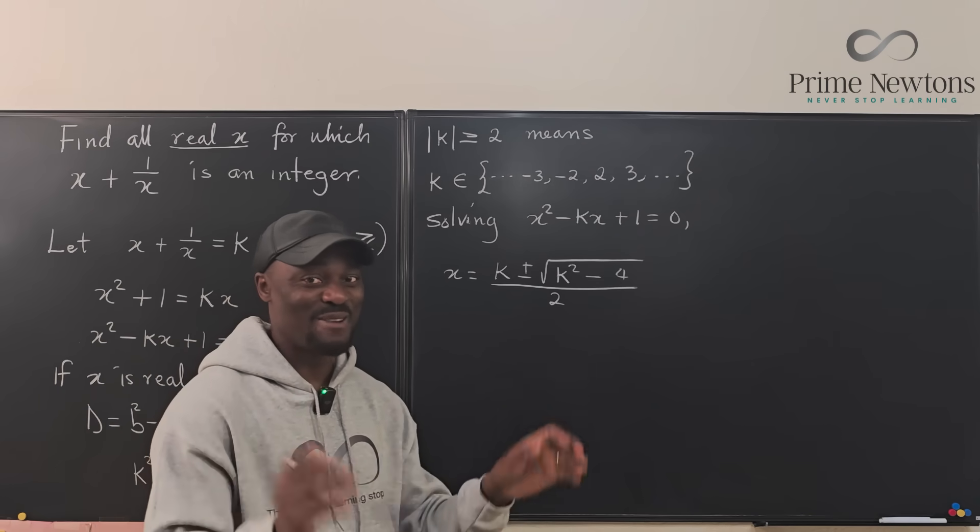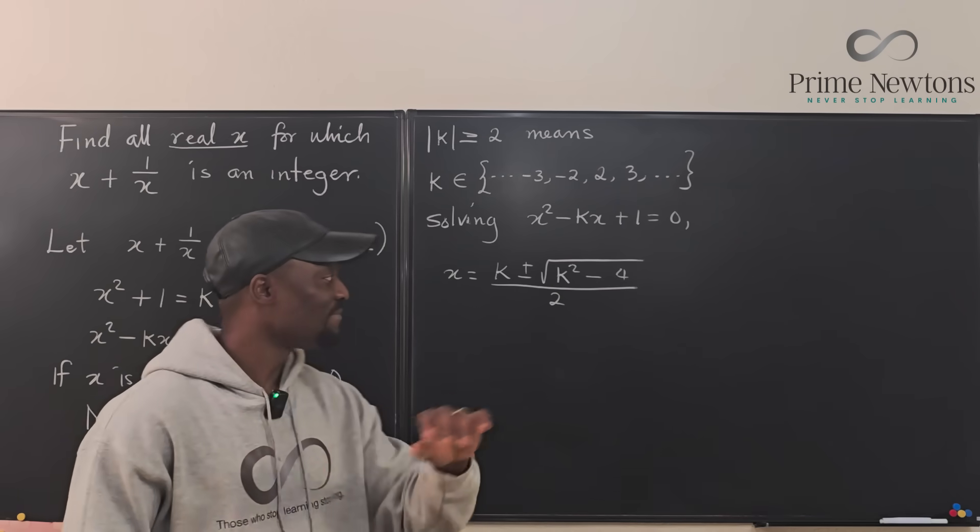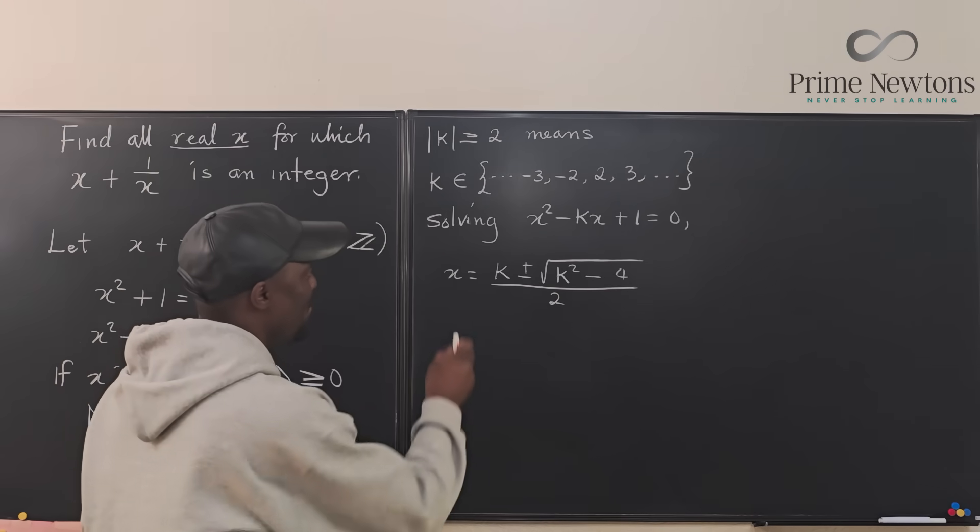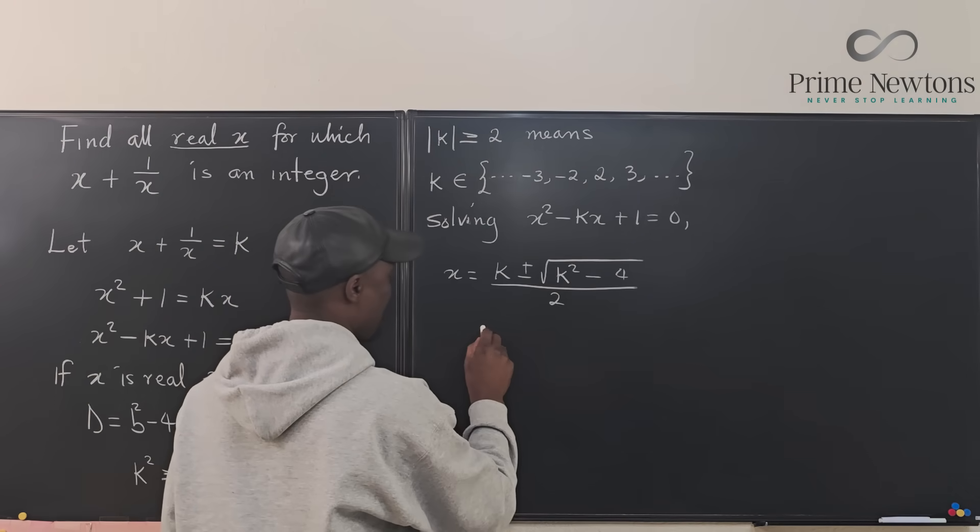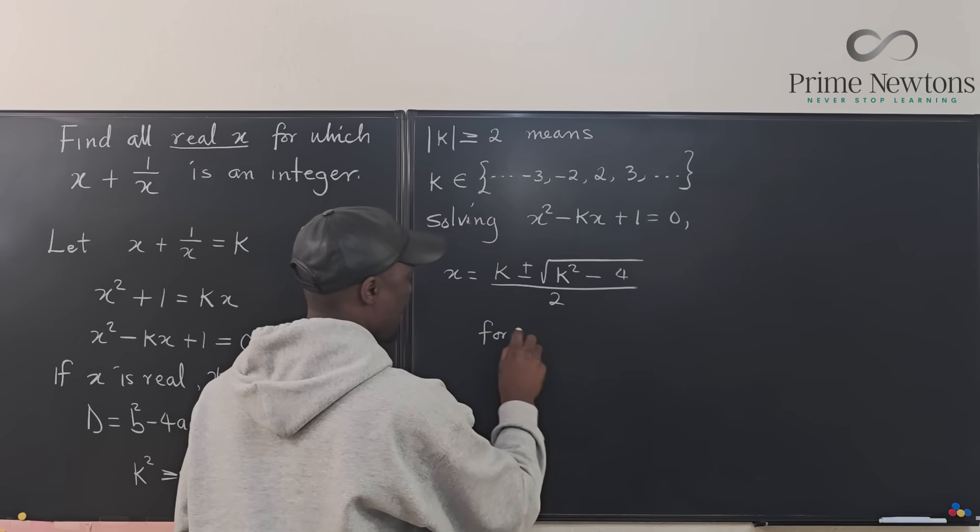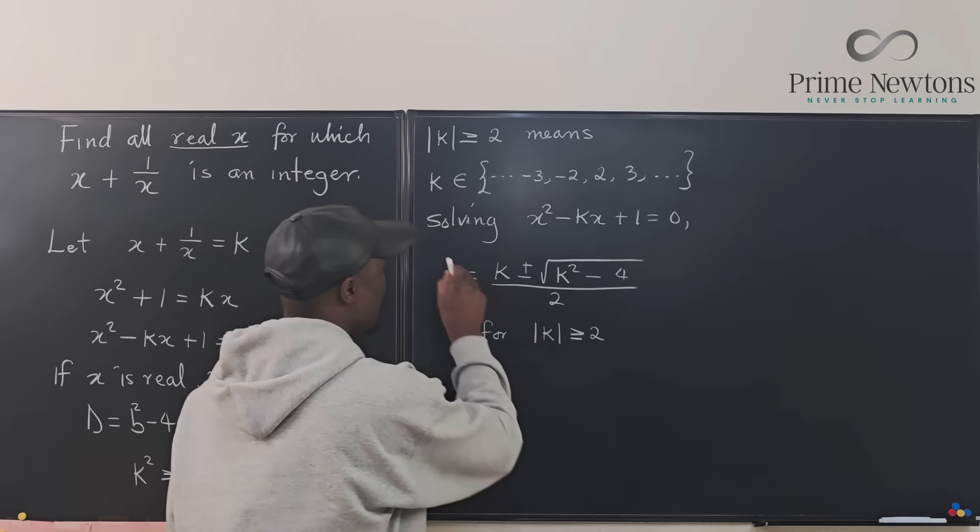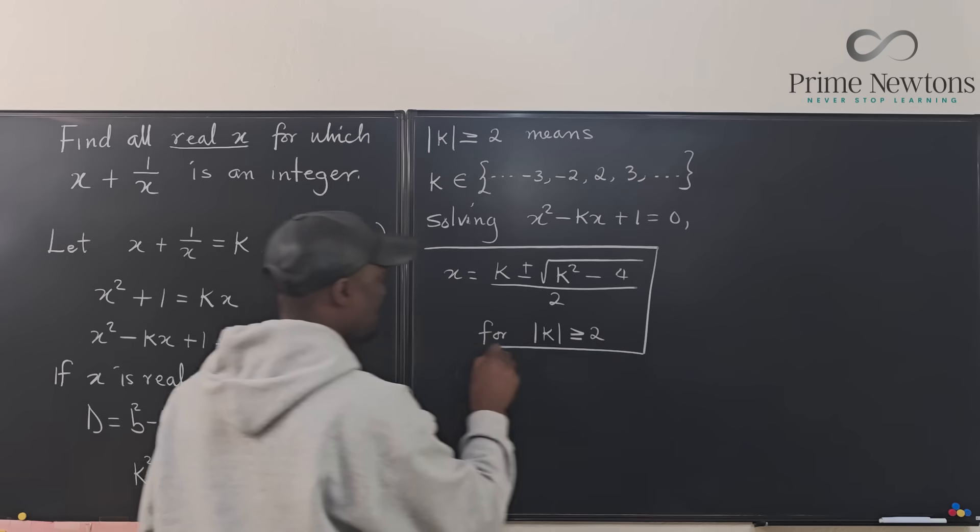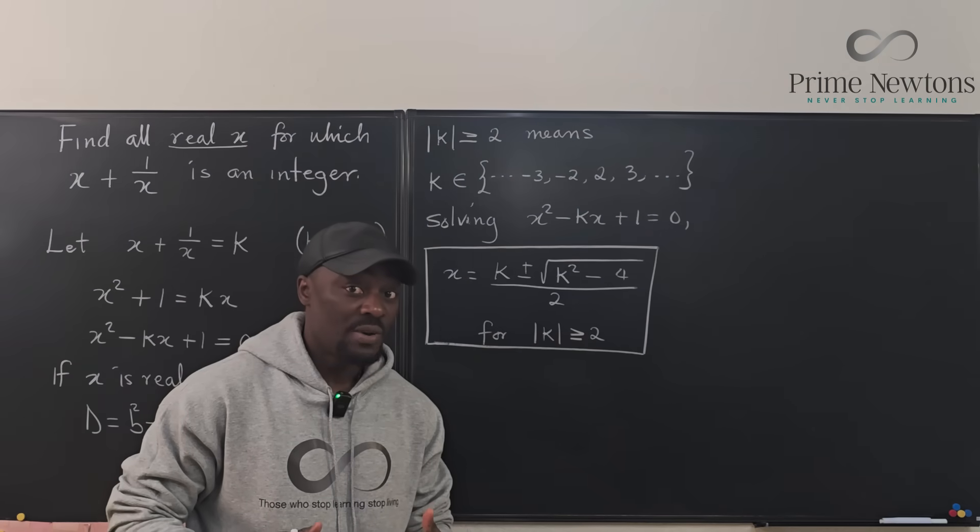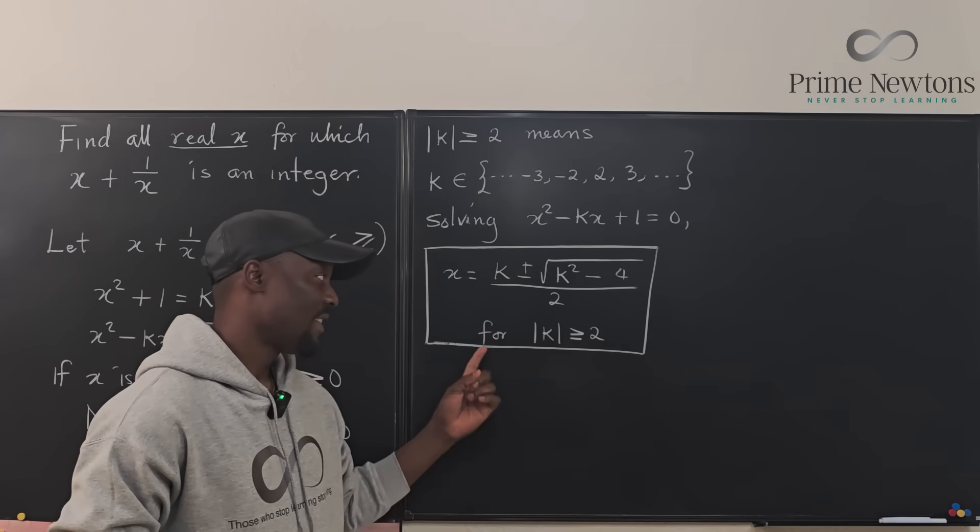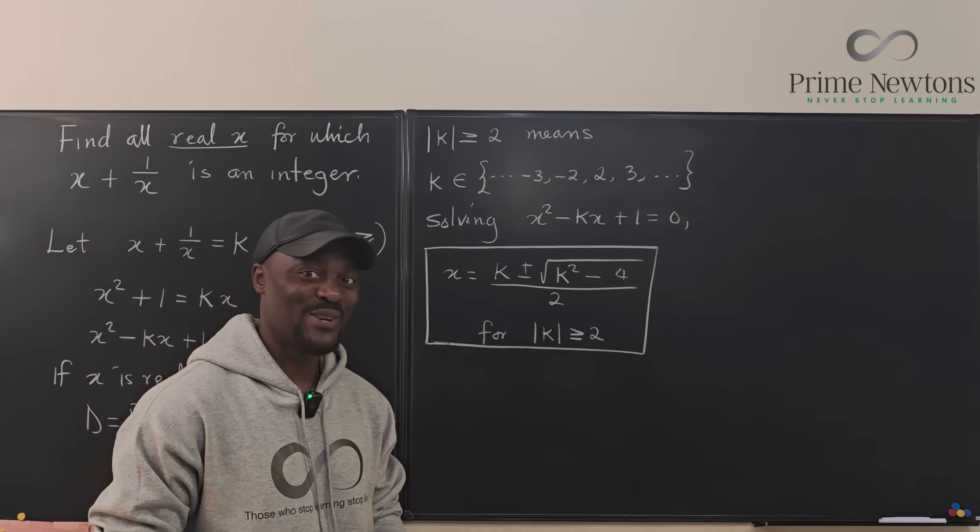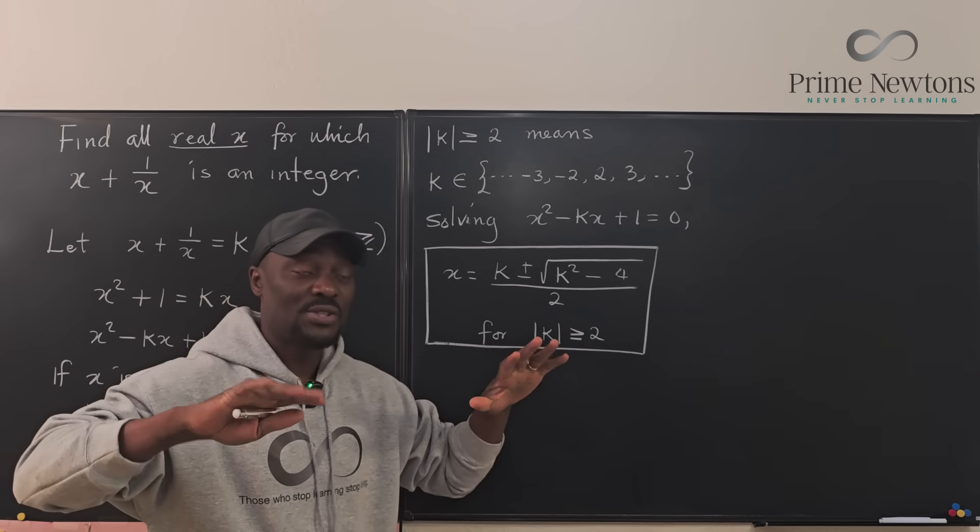You just try it. Pick any value of k. So we have x equals this for absolute value of k greater than or equal to 2. This is the solution. Now, if in your mind you're saying that looks suspicious, how are you sure it's going to work? Let's just test.